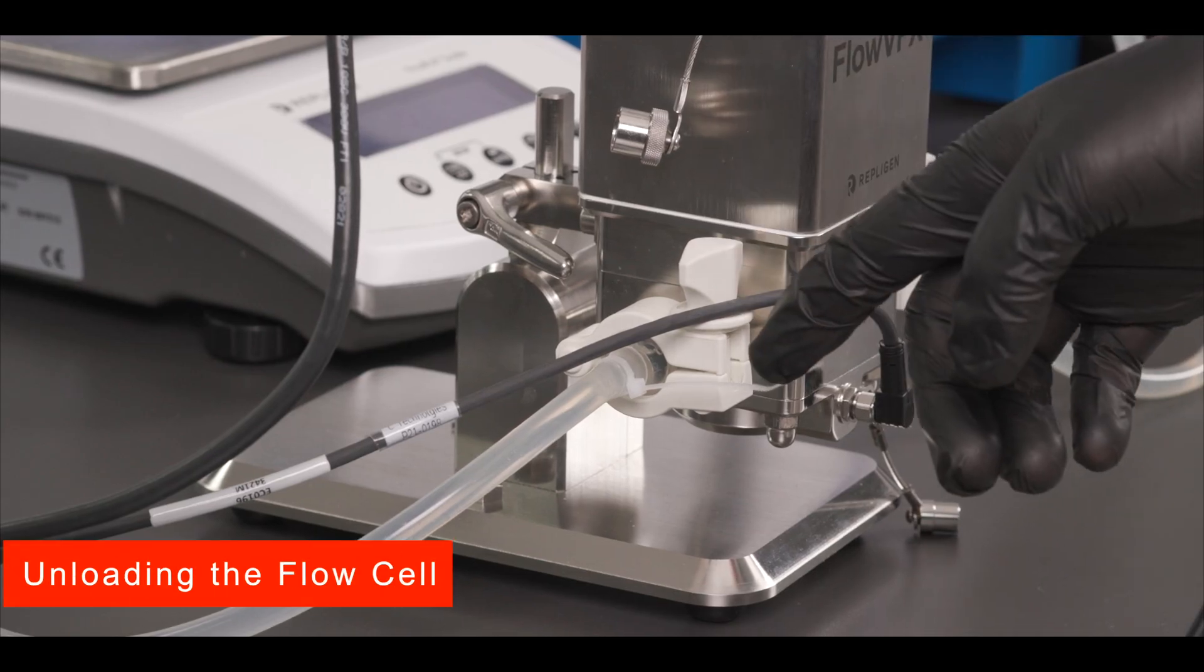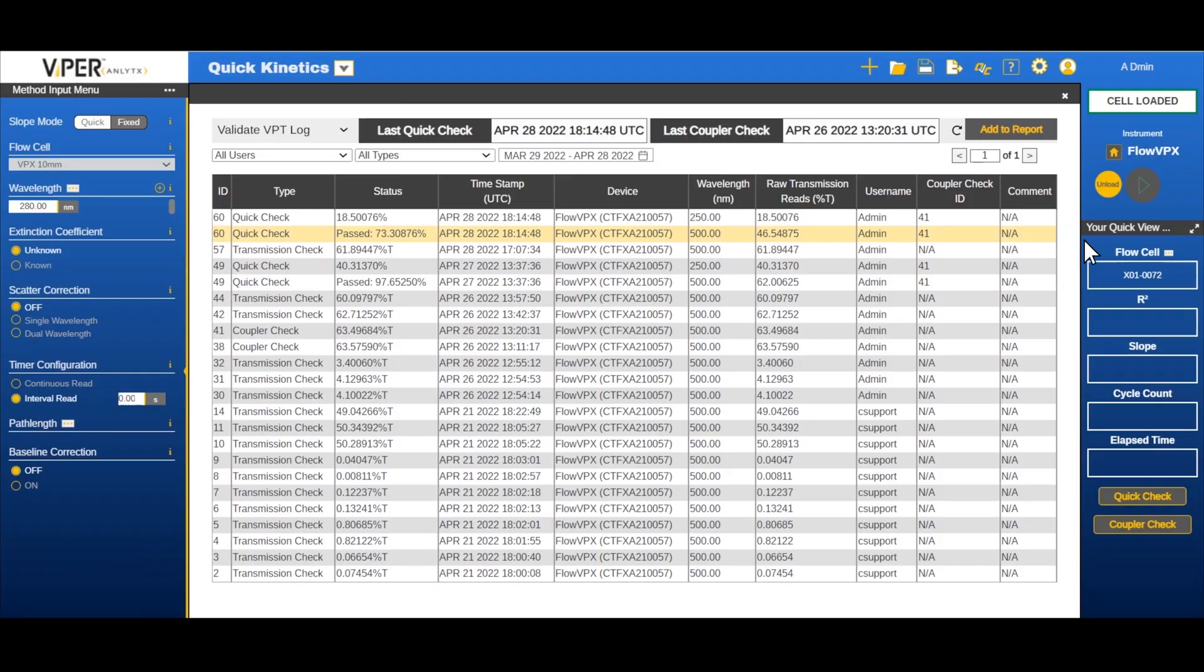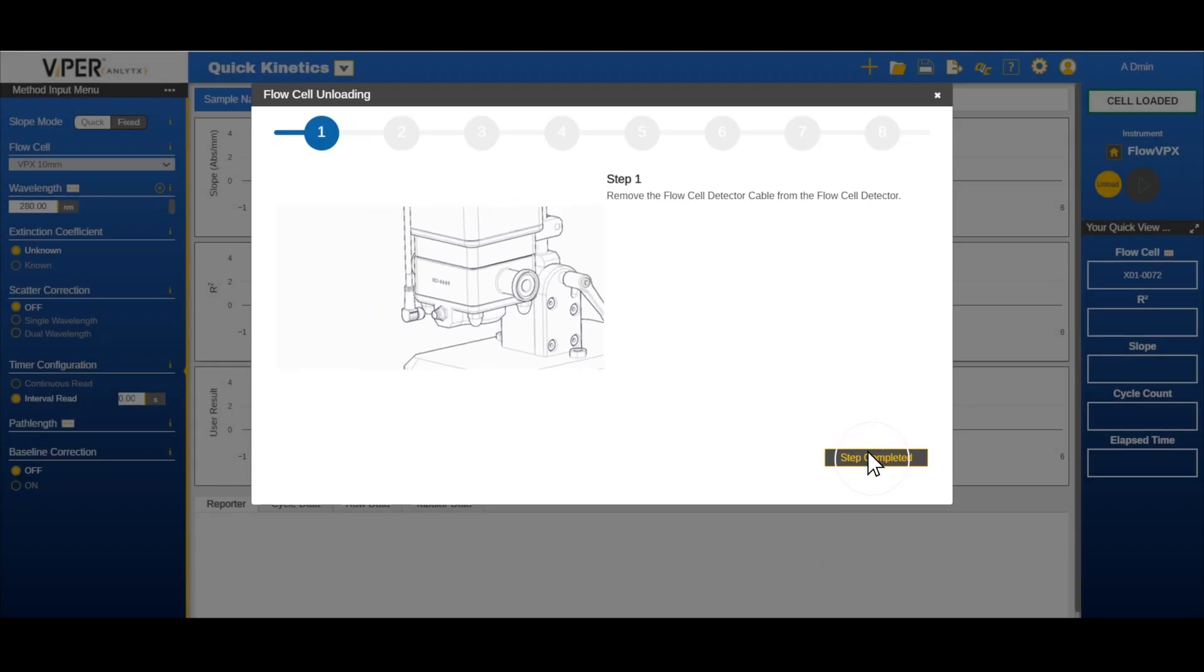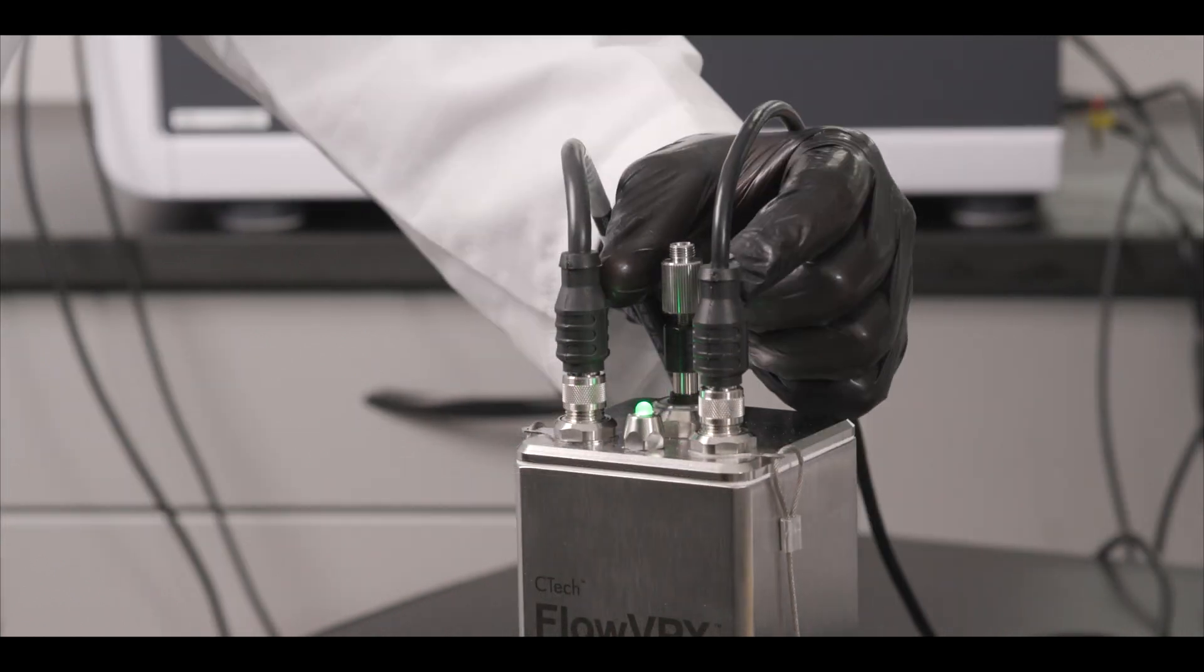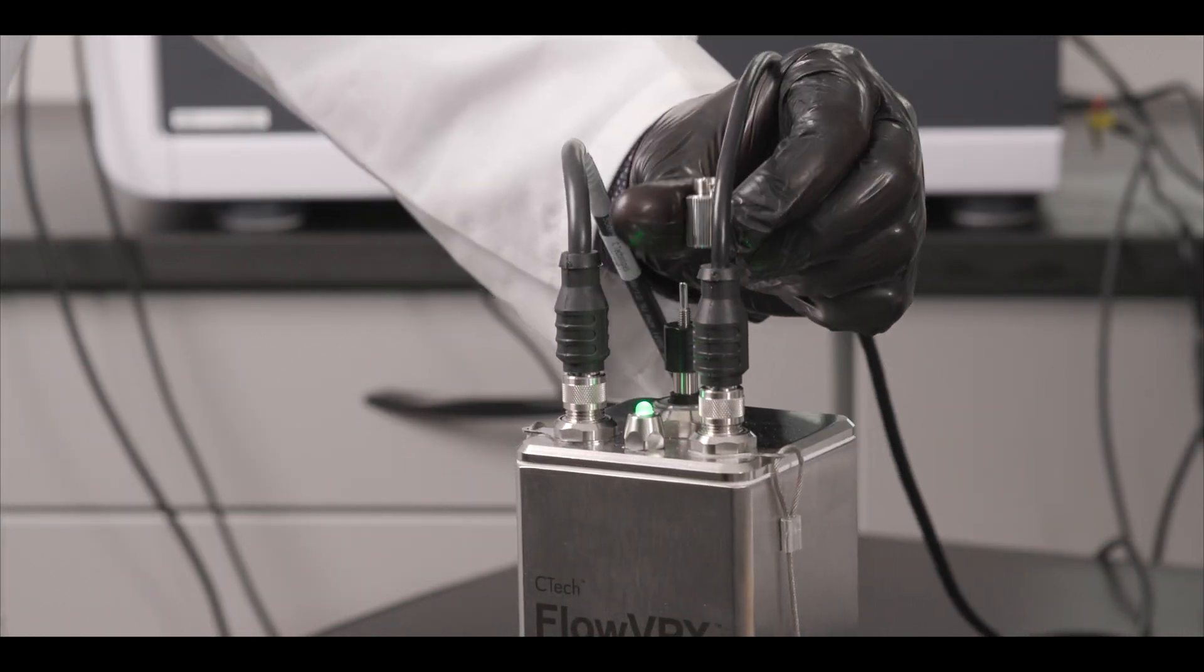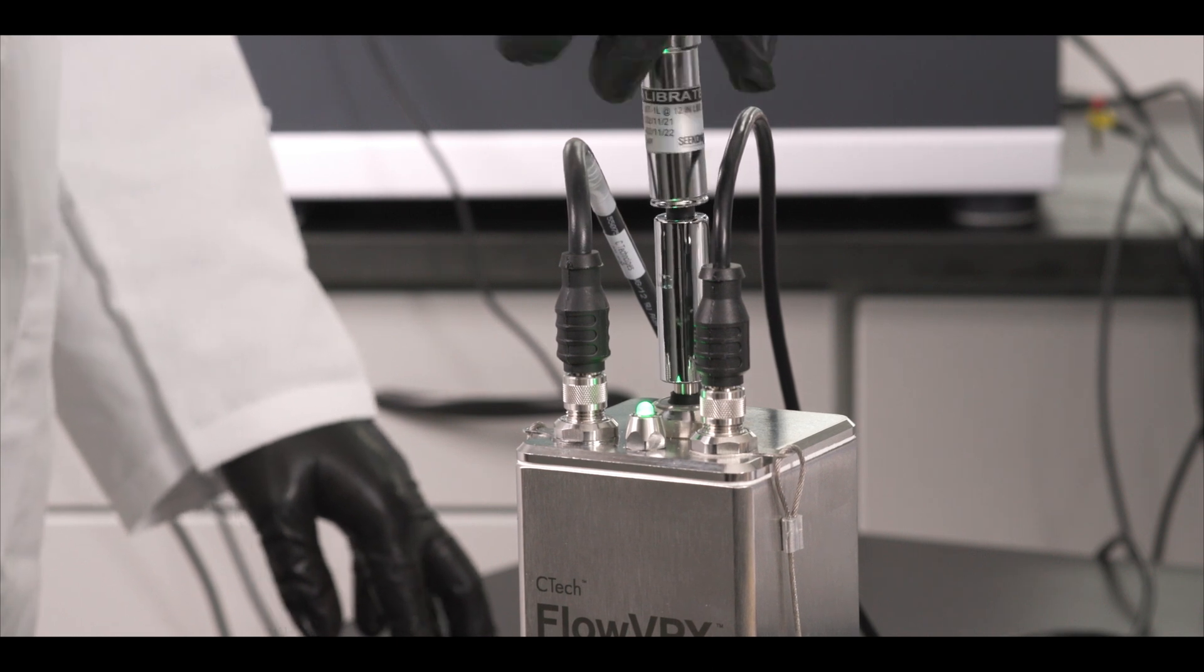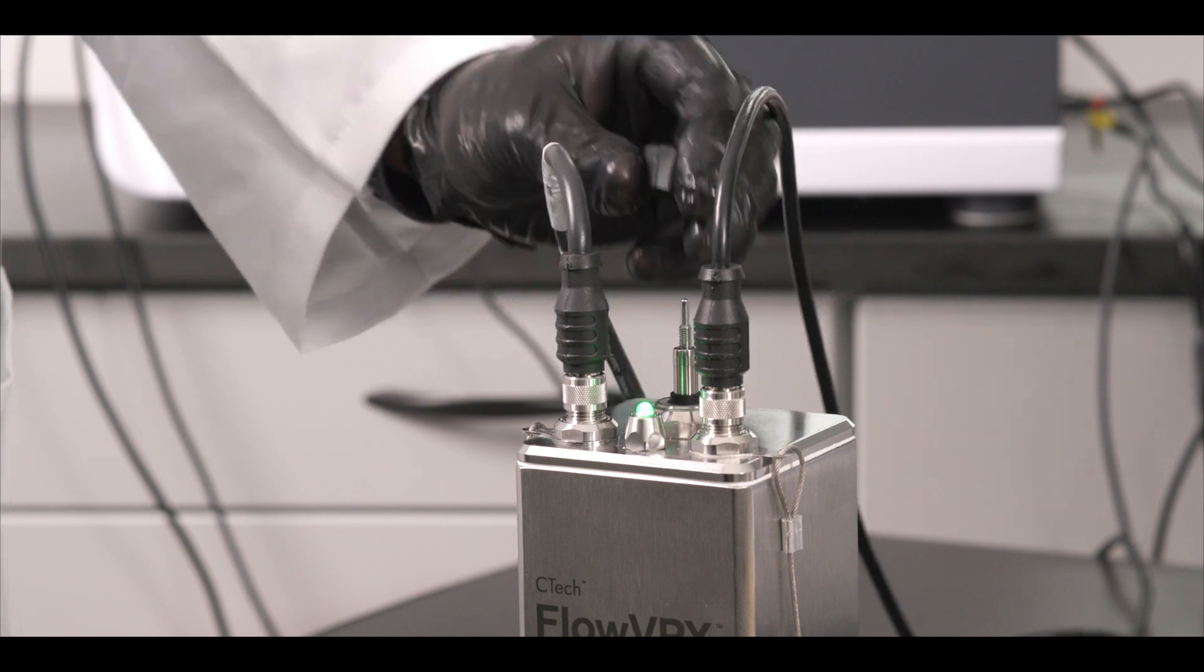To unload the flow cell, first ensure that there is no sample flowing through the flow cell. Click the unload button on the instrument control. Follow the steps prompted on the screen, then click step completed to proceed. First remove the detector cable, then the delivery fiber and the FC and FX connector nut from the FlowVPX instrument. Carefully set aside.